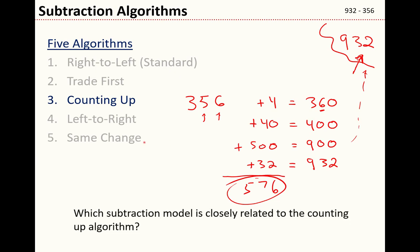This is kind of a cool idea that I can do a subtraction problem only using addition. Which subtraction model is closely related to the counting up algorithm? So I would say it's the missing addend. In the missing addend problem we sort of think to ourselves 356 plus something is 932, and so I add up appropriately to get to my target number.